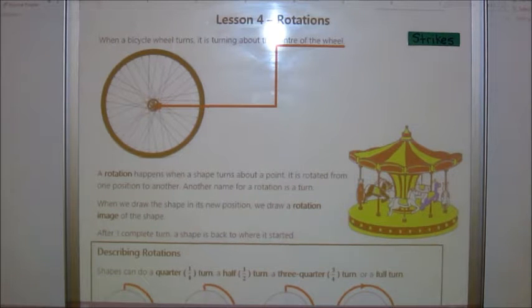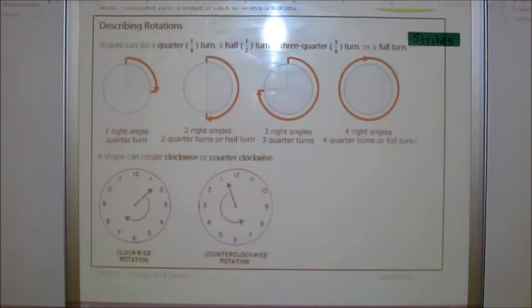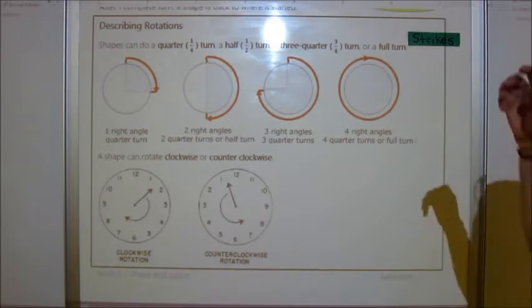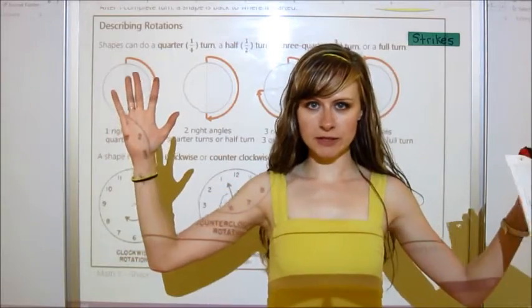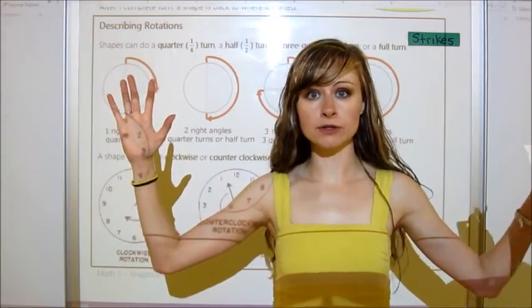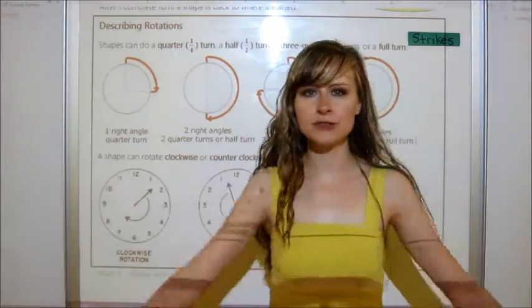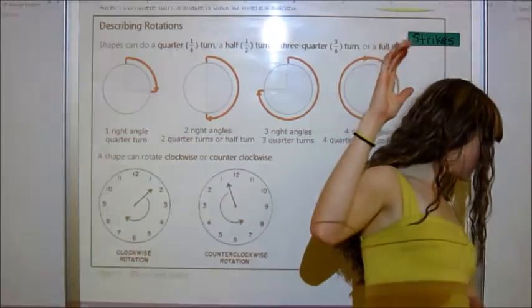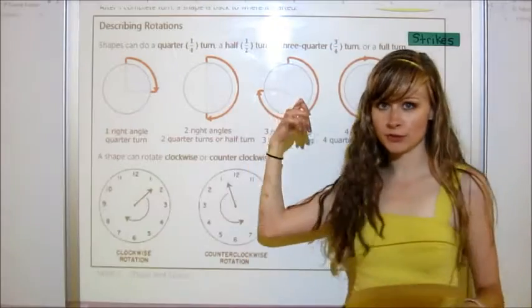So we're going to go down to the bottom here. And we're looking at describing rotations. So it says shapes can do a quarter turn. So if I'm turning like I was, I'm going to do a quarter turn. I just did a quarter turn. They can do a half turn. So if I start here, and then I can do a half turn. There's a quarter, and there's a half.